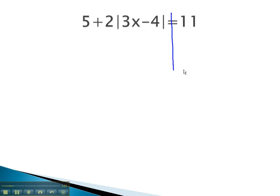We cannot combine the 5 and 2. They are not like terms. The 2 has an absolute value with it. So we will subtract the 5 from both sides. This leaves us with 2 times the absolute value of 3x minus 4 equals 6.